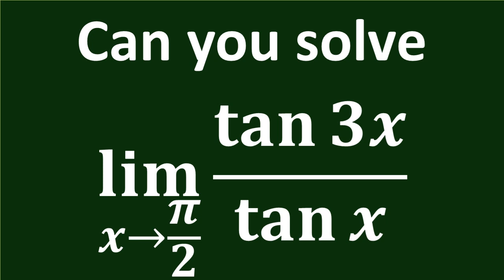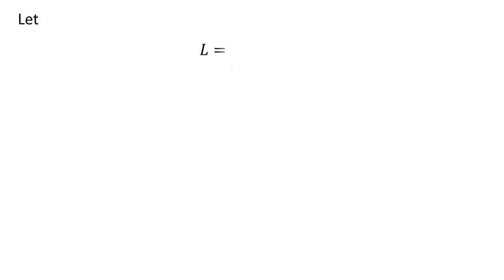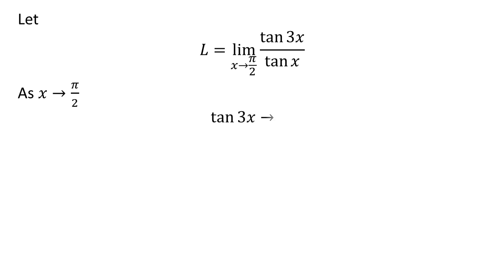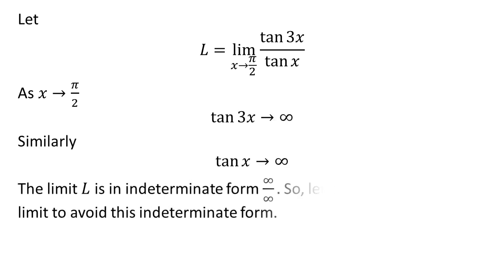In this video, we will learn to find the limit of tangent of 3x upon tangent of x as x approaches half of pi. Let us assume L is the limit of tangent of 3x upon tangent of x as x approaches half of pi. As x approaches half of pi, tangent of 3x and tangent of x approach infinity. The limit is in indeterminate form infinity upon infinity, so let us further simplify the limit to avoid this indeterminate form.